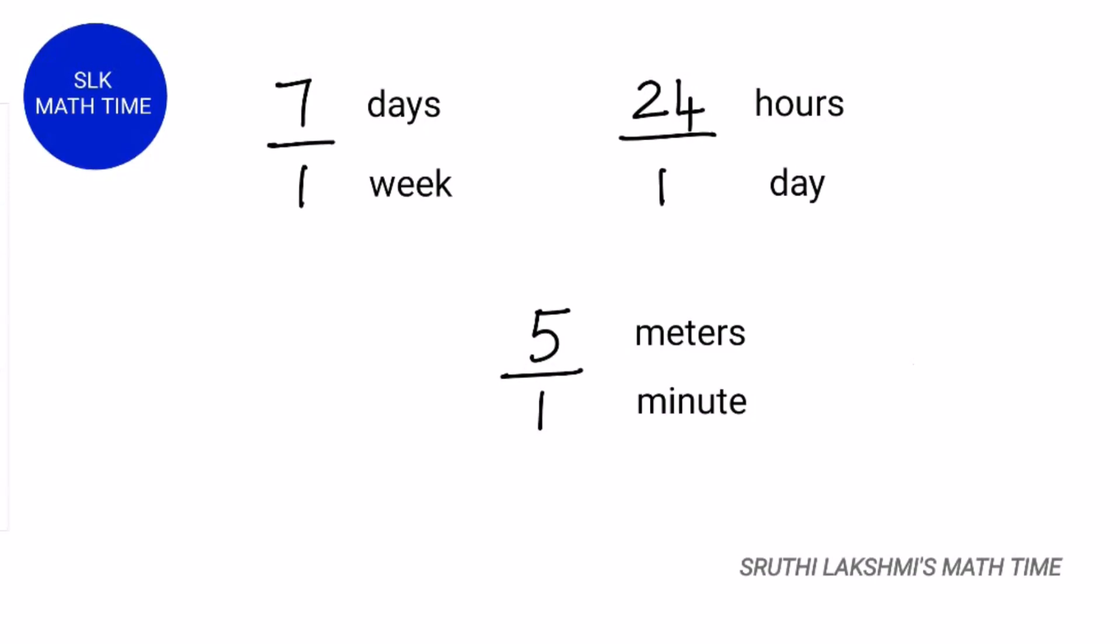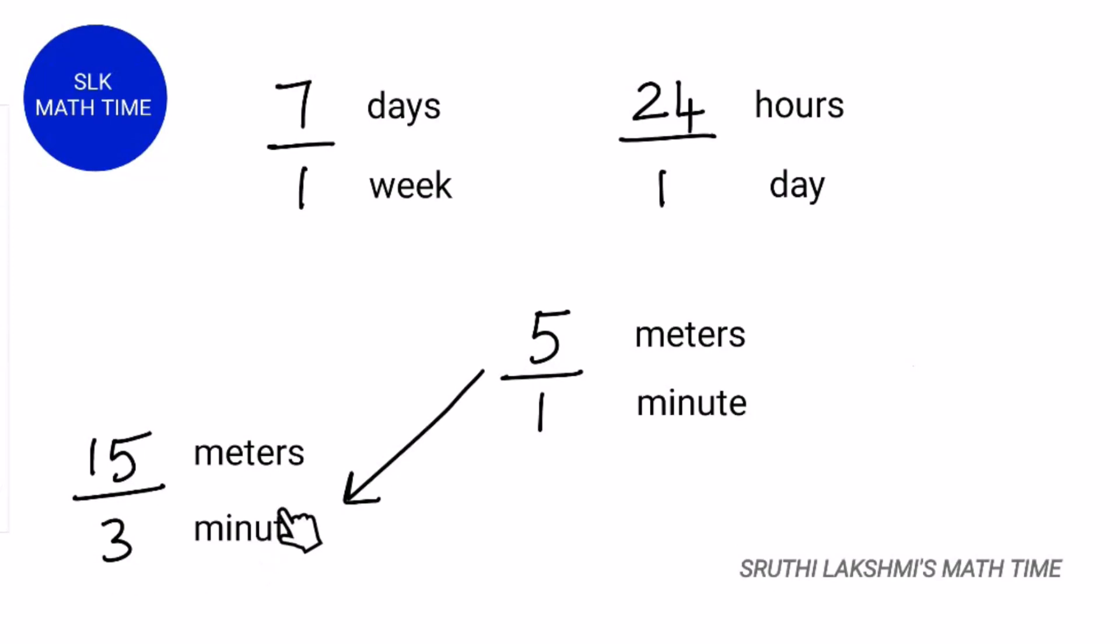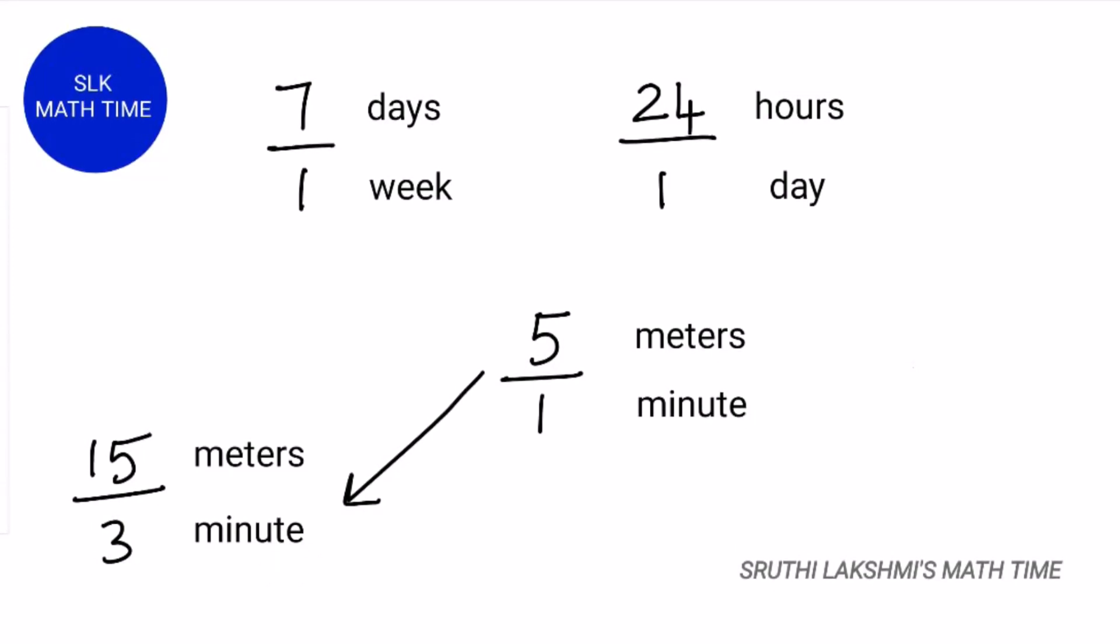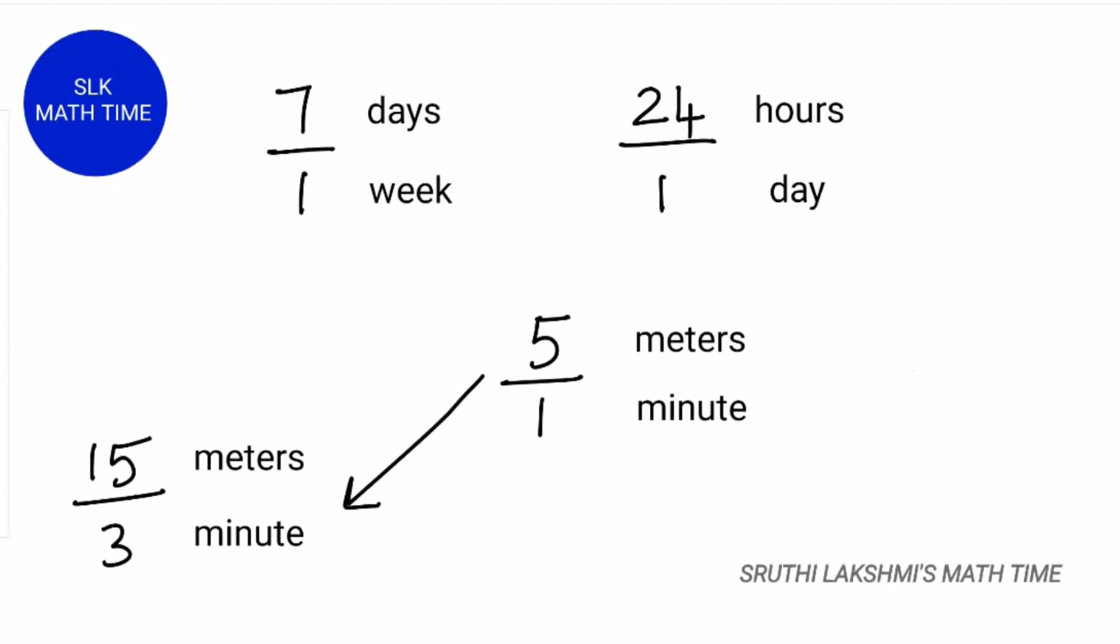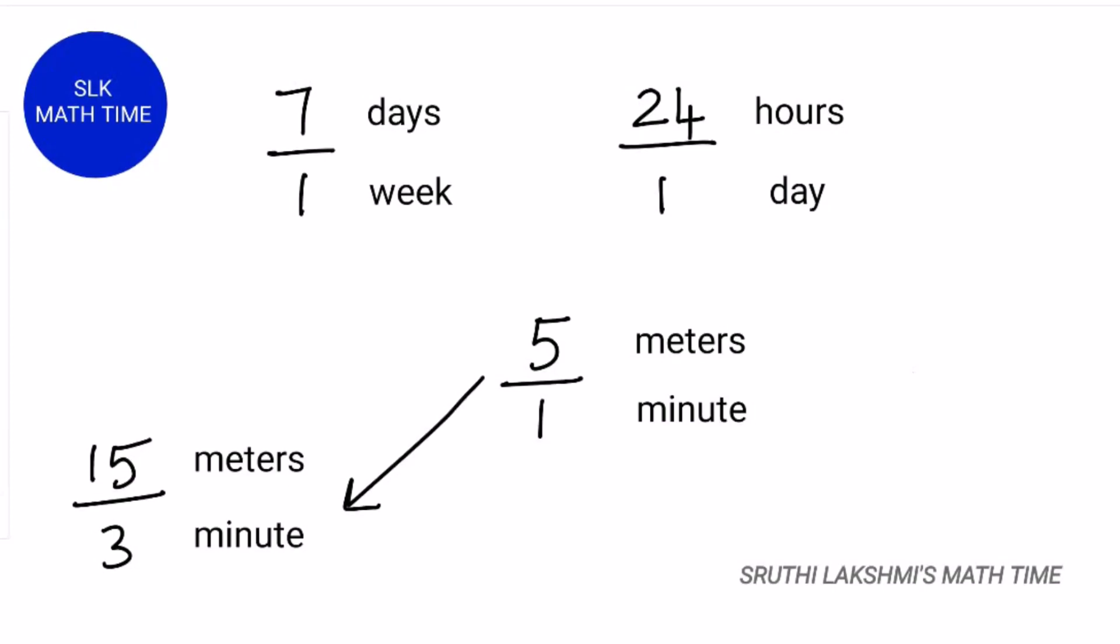Couldn't you have a rate like 15 meters per 3 minutes? We want to convert them into an equivalent rate that has 1 as the bottom number. That's because whenever the bottom number represents only one unit, it makes comparing different rates much easier.